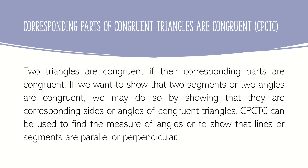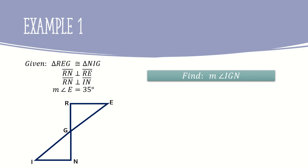There is no better way of understanding it than having an example. In the given figure, triangle REG is congruent to triangle NIG. Line segment RN is perpendicular to line segment RE, which means they formed a 90-degree angle. The same goes for line segment RN and line segment IN — they are also perpendicular to each other. The measure of angle E is equal to 35 degrees, and we are tasked to solve for the measurement of angle IGN.